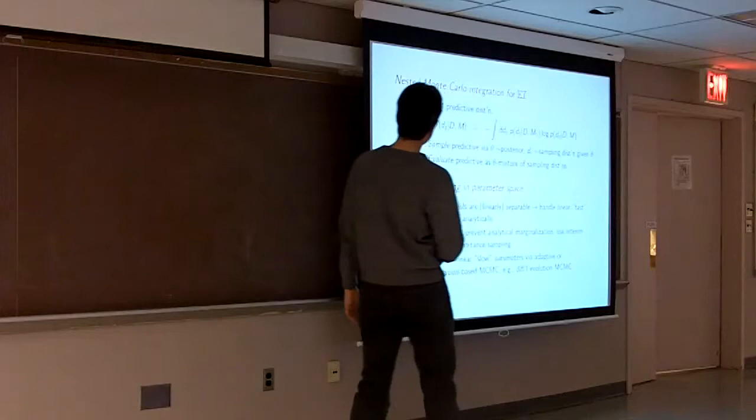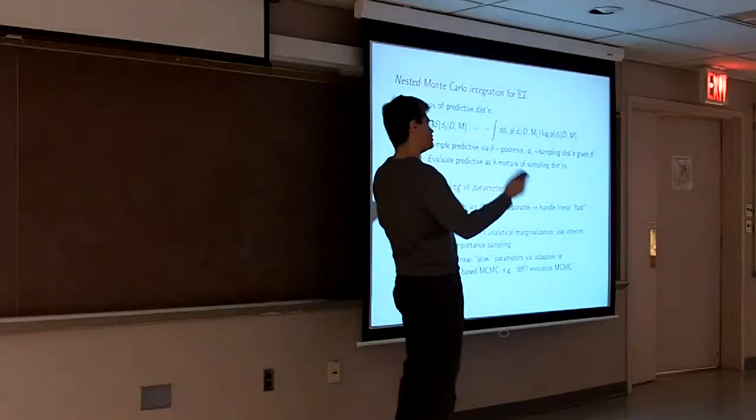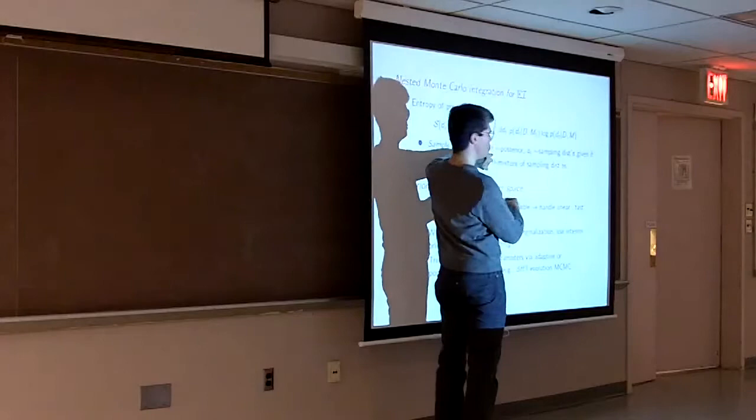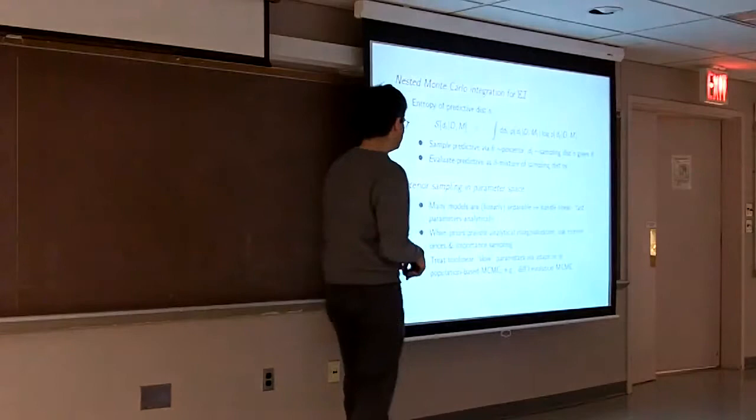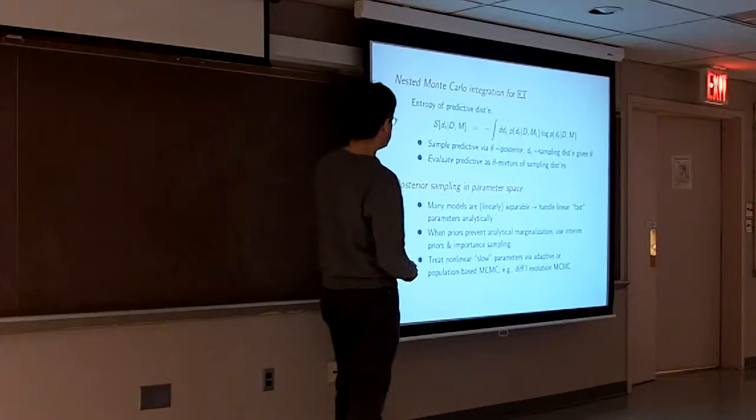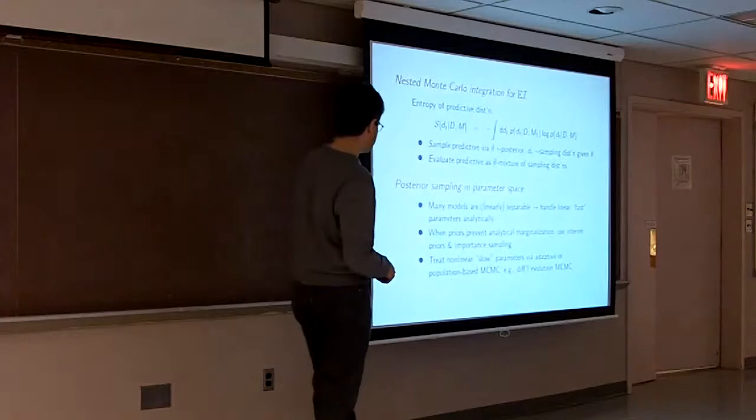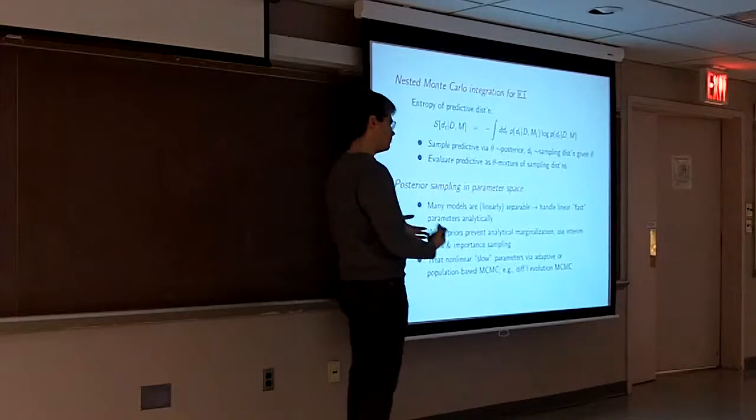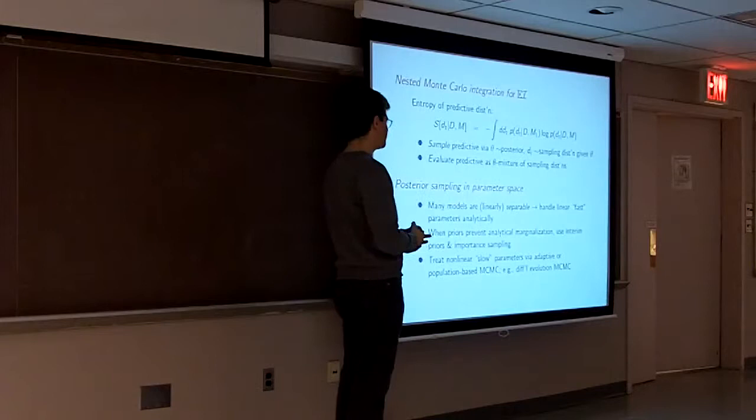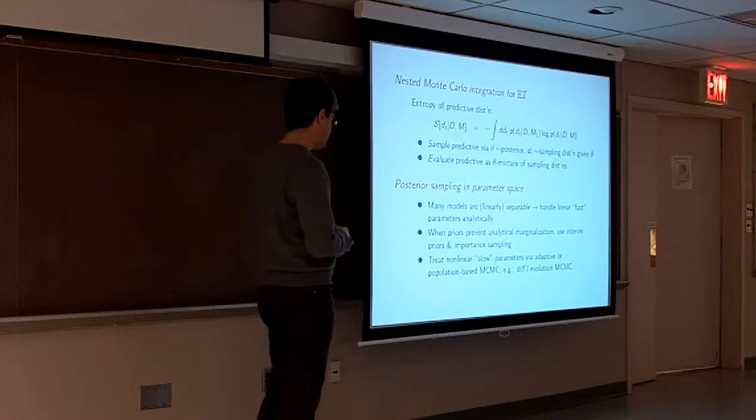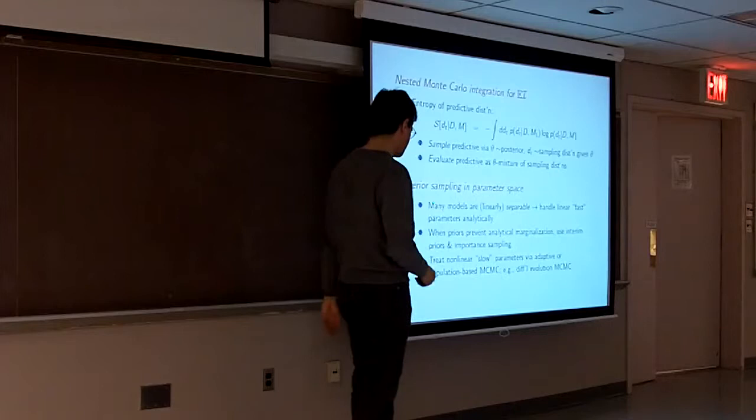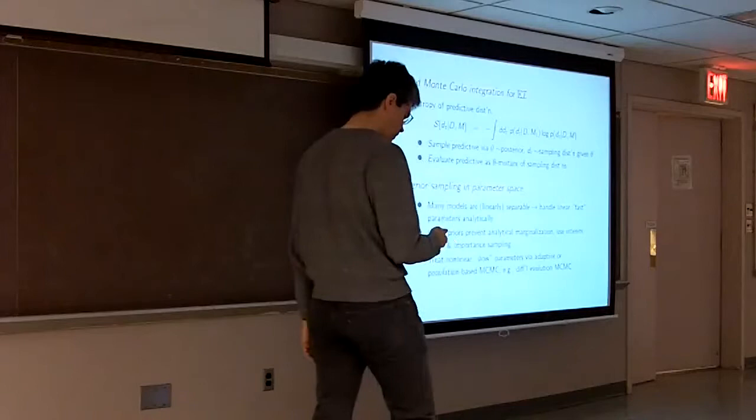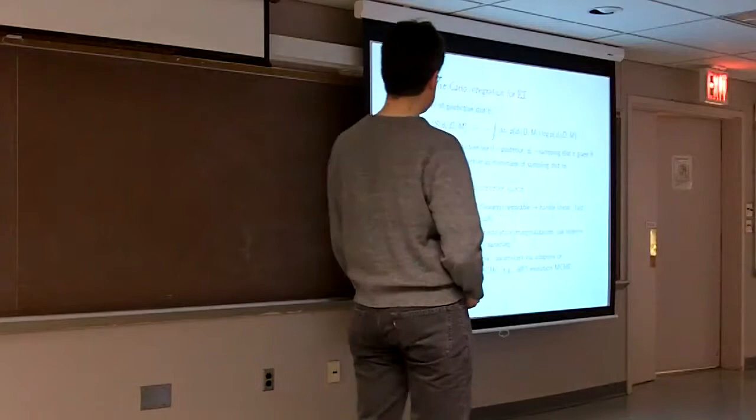Remember entropy gets big when your distribution is uncertain. So this is saying the best observing time, the time that maximizes this, is the time for which my predictions are the worst. So it's kind of an intuitively sensible criterion to learn the most, sample where you know the least. But how do I actually calculate that integral? We use a nested Monte Carlo method. We're going to do standard tools for Bayesian inference to get samples in parameter space, the parameter distribution. And then if we know those, then we can both evaluate and sample this predictive distribution very straightforwardly. So that's this nested Monte Carlo integration. And then to do this posterior, to get these samples of the posterior distribution, we're going to use a property of these exoplanet models, which is that if you write out the model, it's a linear sum of non-linear terms.